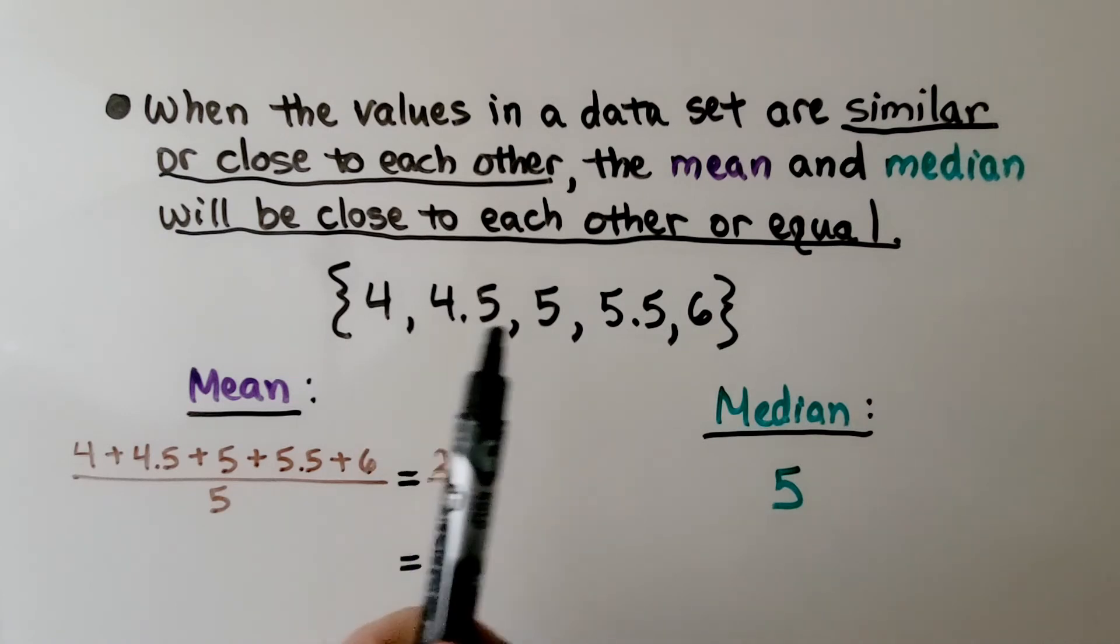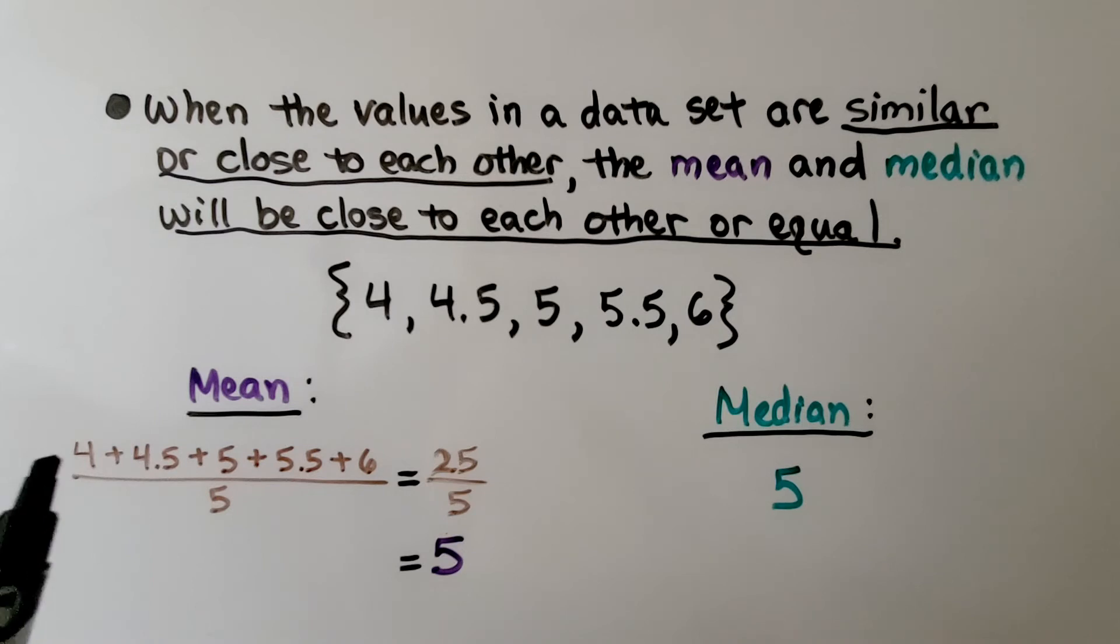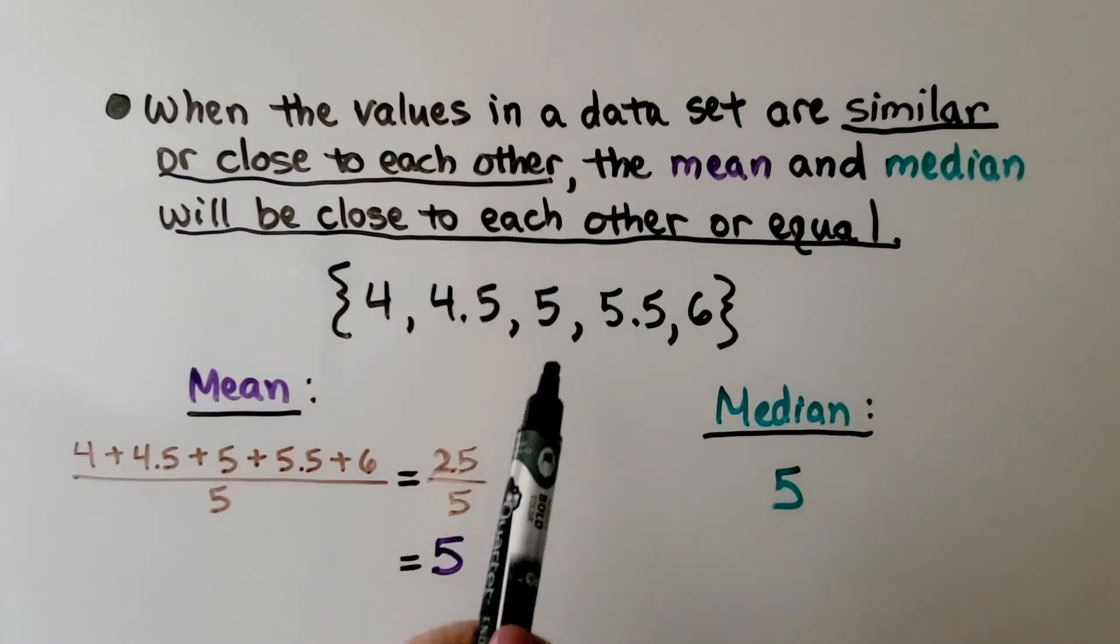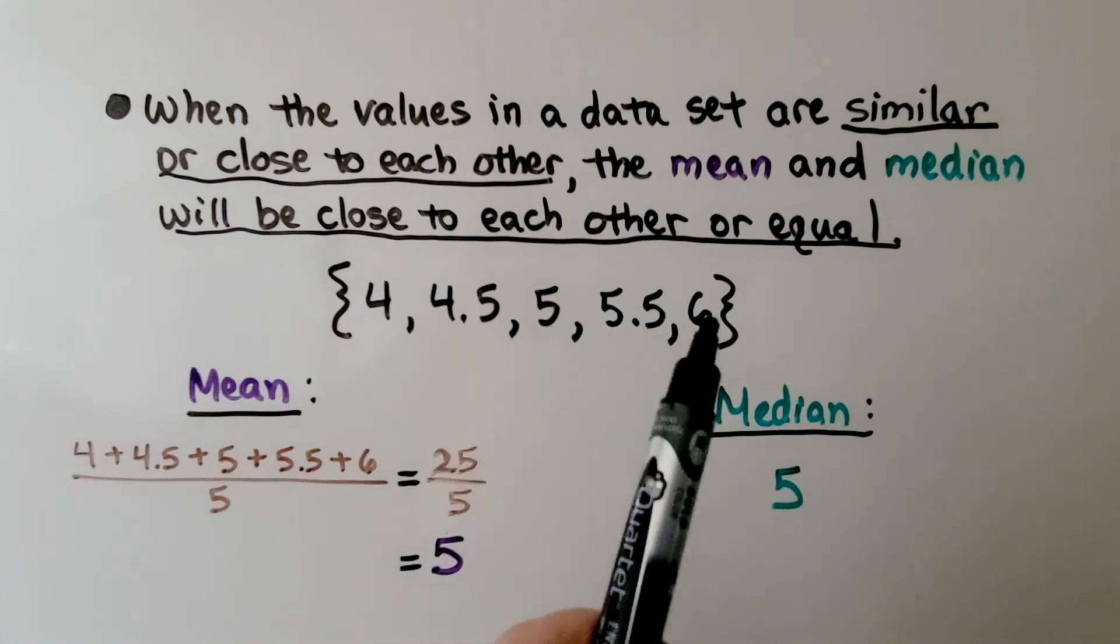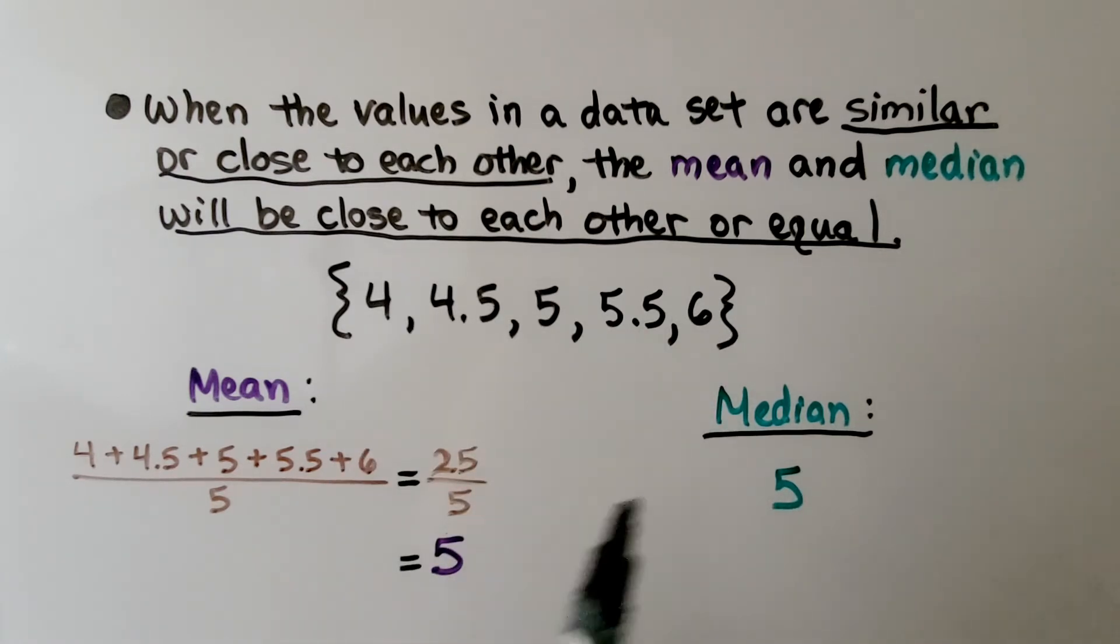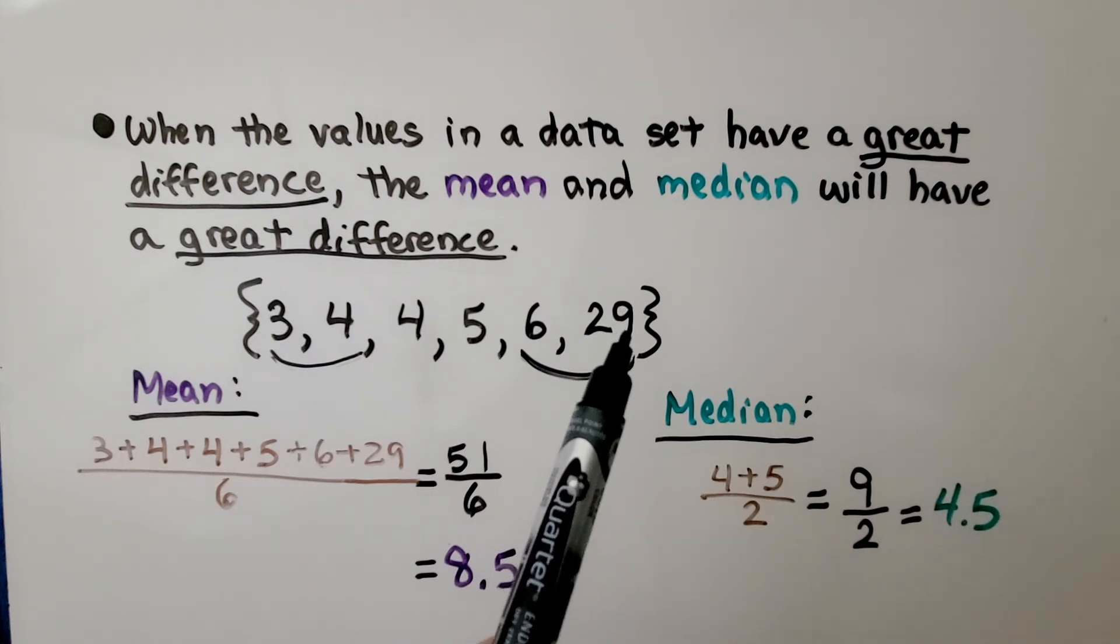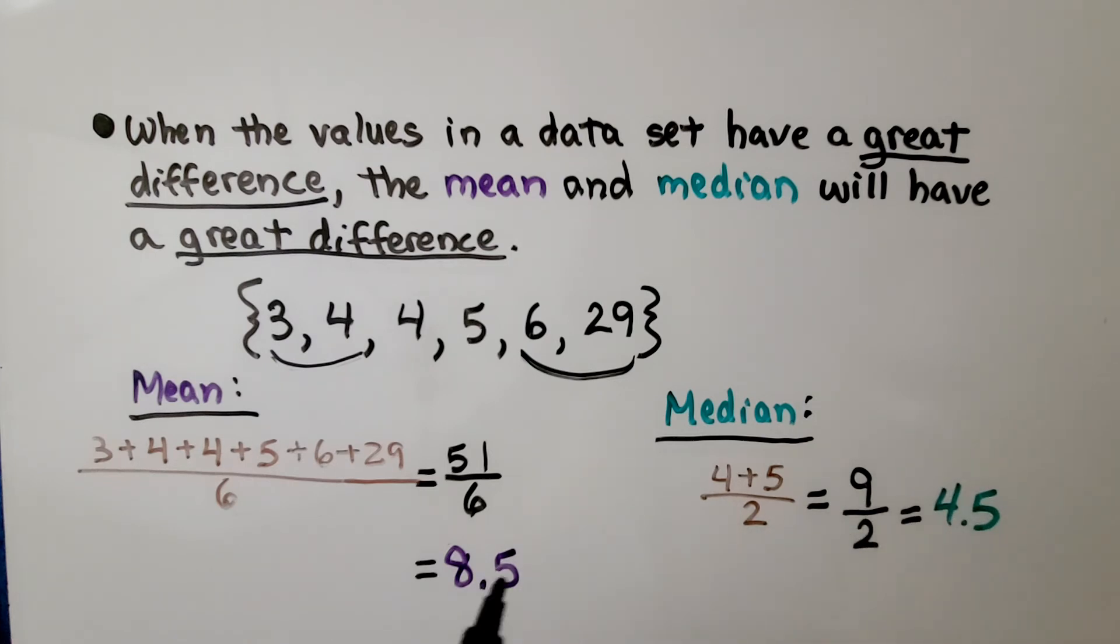We have these numbers in the data set that are all pretty close to each other. When we find the mean, we get 25 divided by, there's 5 numbers here, we get a 5 for our mean. And if we look at the center number, we have a 5. So because these numbers were pretty close to each other, we ended up with an equal mean and median. For this data set, because we had this number 29 way over here, that made the mean and median farther apart from each other in value.